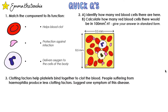It's time to try the quick questions. I recommend grabbing some paper and a pen to give these a go, and when you're done, just press play and we'll mark the answers together. Number one: match the component to its function. The red blood cell's function is to deliver oxygen to the cells of the body. The second one is a platelet — as it's really small — and its function is to help the blood clot. And then we're left with the white blood cell, whose function is to protect against infection.